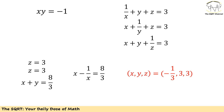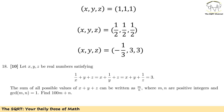Now let's take a look at the other case where xy equals negative 1. From the first equation the first two terms cancel and we get z equals 3. From the second equation we get the same result, but from the last equation we get x plus y equals 8 over 3. Using y equals negative 1 over x, we find that x, y, and z are negative 1/3, 3, and 3.